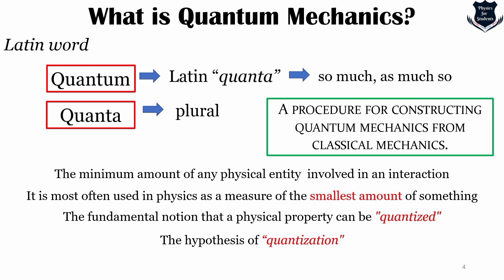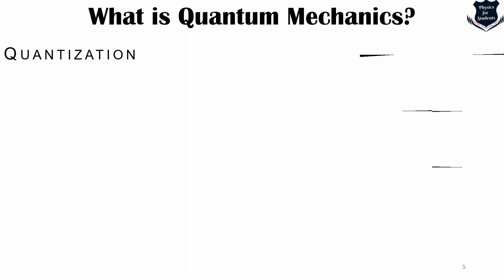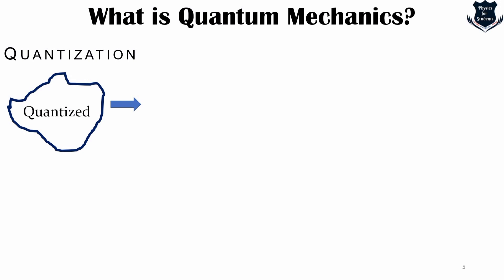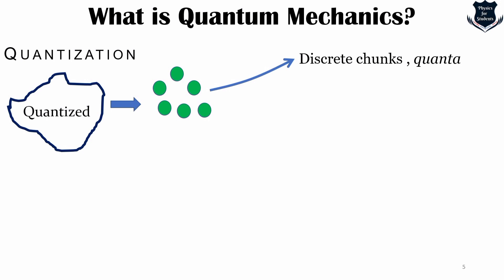Quantization in physics is the systematic transition procedure from a classical understanding of physical phenomena to a newer understanding known as quantum mechanics. It is a procedure for constructing quantum mechanics from classical mechanics. When we say an object is quantized, that means these are discrete chunks — let us call it energy. These are the discrete chunks of energy, and when we come to the atomic model we see that these numbers are quantized, say for example one joule, four joules, or whatever.